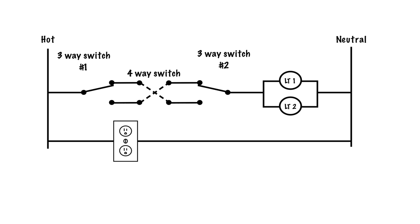Throwing in a four-way switch means you're going in between the two three-way switches. Four-way switches only have traveler terminals — no common terminals. If I wanted to switch from more than three locations I would just throw another four-way switch in. So a schematic will always have three-way switches on each end, and if you want to switch from more than two locations you just add four-way switches in between.